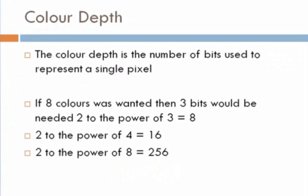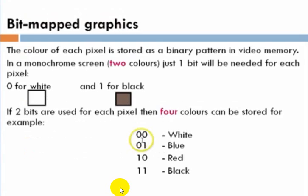So the color depth is the number of bits used to represent a single pixel. Now, if 8 colors were wanted, then 3 bits would be needed. 2 to the power of 3 equals 8. 2 to the power of 4 equals 16. 2 to the power of 8 is 256. So do you see, as we go up the binary scale, as it were, we are getting greater color depth. If you want a greater palette, a greater color variety.